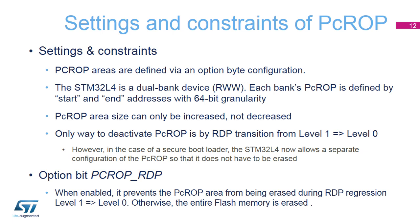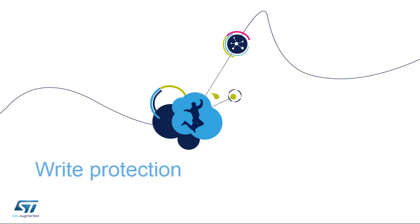Once the development phase is completed, the PCROP can then be turned into an RDP setting, level 1. In this case, the external world is limited to read-only, but the PCROP settings for specific sectors still apply to all masters trying to read that code.